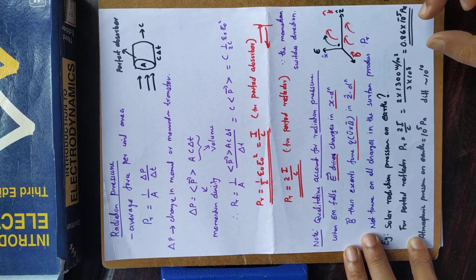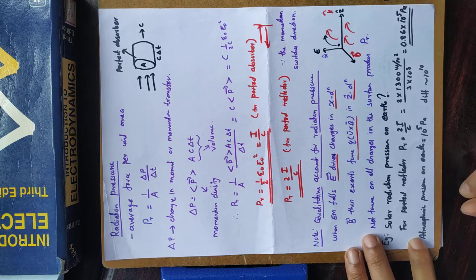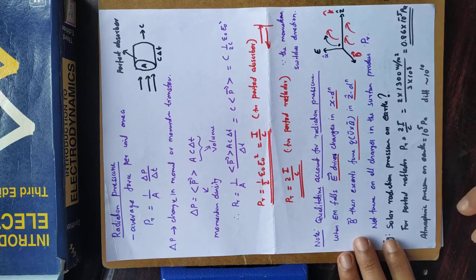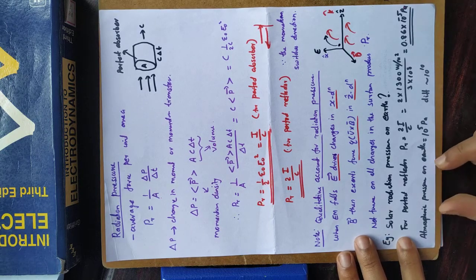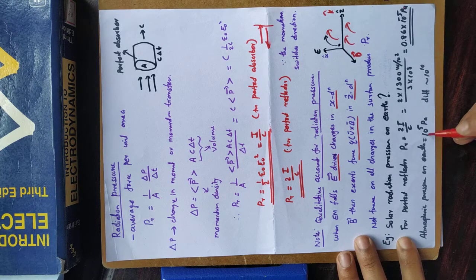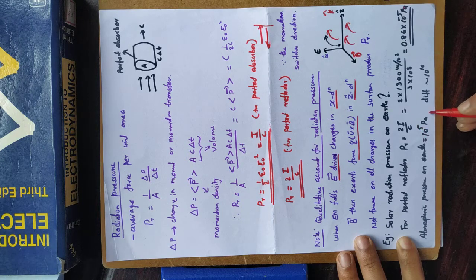We can compare that with the atmospheric pressure on Earth. The atmospheric pressure on Earth is 10⁵ Pascal, so the solar radiation pressure is about 10¹⁰ times smaller than atmospheric pressure.